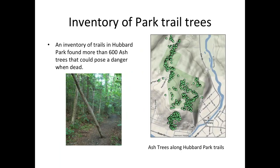In Hubbard Park, one of our parks with many older trees, John Akalajic found 600 trees with the potential to fall on a trail — as shown in this picture from his inventory. That's 600 trees in one of our major parks.